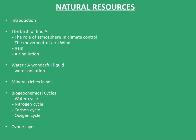Hello guys, let's begin with a new chapter: Natural Resources. Let's have a brief outline of the things we'll be studying. First is the introduction, followed by the resource Air — we'll look at the role of atmosphere in climate control, winds, rain, and air pollution. The second resource is Water, then water pollution. The third is Soil, and mineral riches in soil. Then we'll learn about biogeochemical cycles: the water cycle, nitrogen cycle, carbon cycle, and oxygen cycle. Finally, we'll end with the ozone layer.